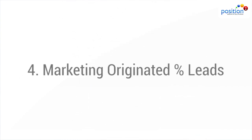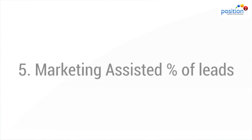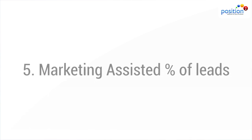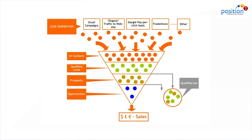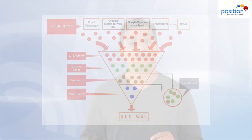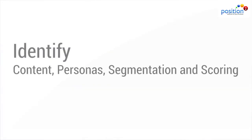Number four: marketing originated percentage of leads. And number five: marketing assisted percentage of leads. Typically, you want 40 to 80 percent of leads to be originated by marketing. You also want those leads assisted by marketing at a much higher level. If not, your sales cycle will be much longer and much more expensive than they could be. In both cases, work closely with sales to break down the lead process and look to buttress your content, personas, segmentation, and scoring. This article helps give marketers insight on what their executives care about, so check it out.